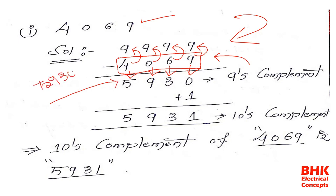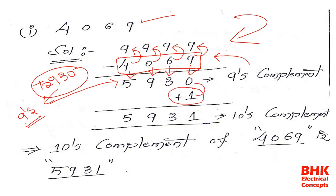Now that we have the nines complement 5930, we need the tens complement, so we add 1 to the nines complement. Adding 1 gives us 5931. This number 5931 represents the tens complement of 4069.